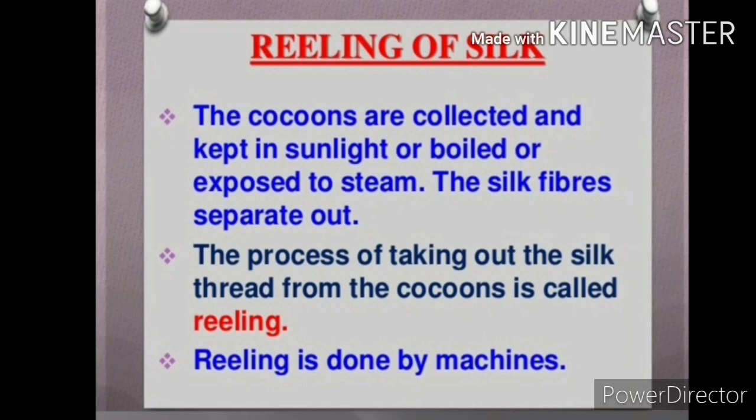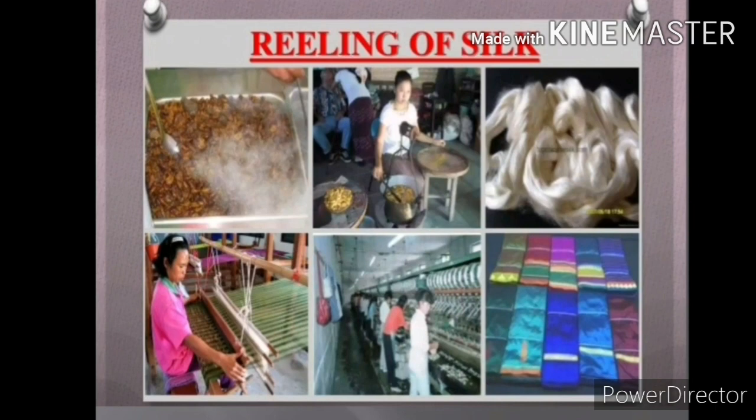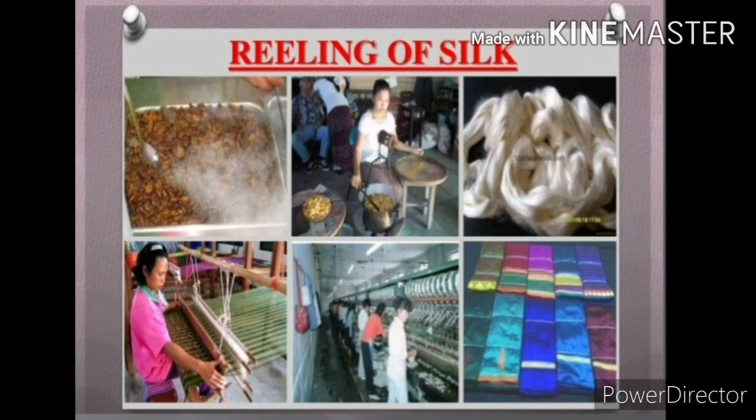Reeling of silk is the second step. The cocoons are collected and kept in sunlight, boiled, or exposed to steam. The silk fibers then separate out. The process of taking out the silk thread from the cocoon is called reeling. Reeling is done by machines. In this diagram you can easily see how the silk is reeled out into a yarn.